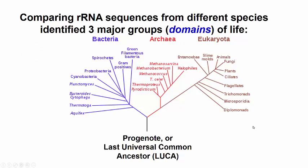By this analysis, all species in the world today can be grouped into three major domains: the bacteria, the archaea, and the eukarya.